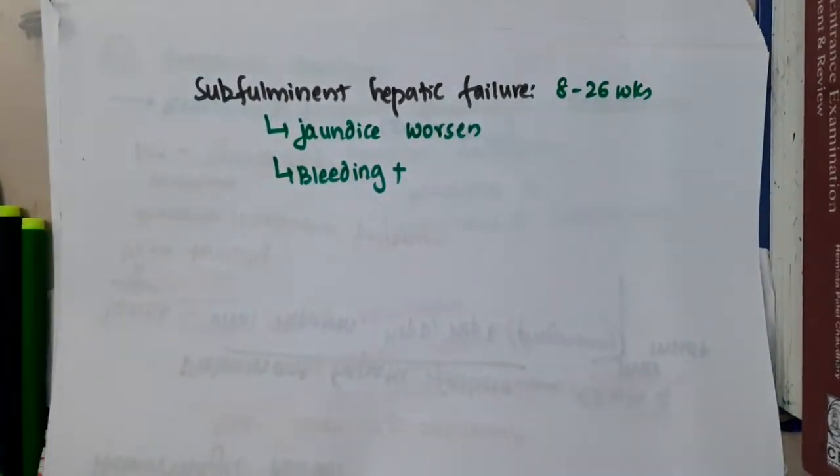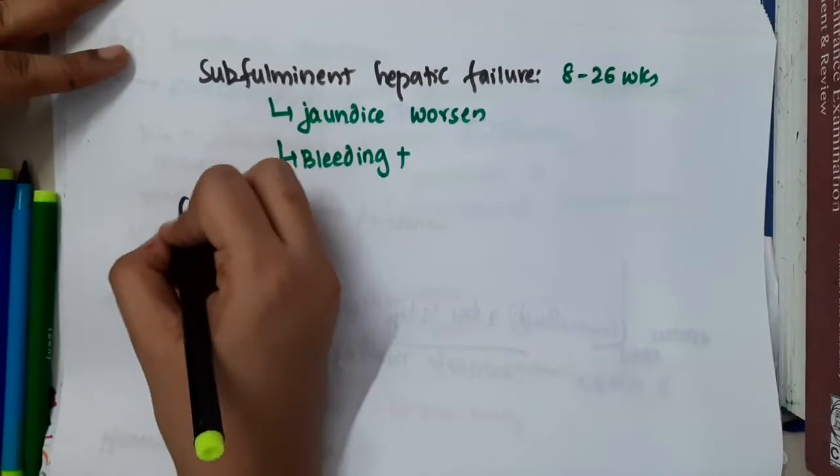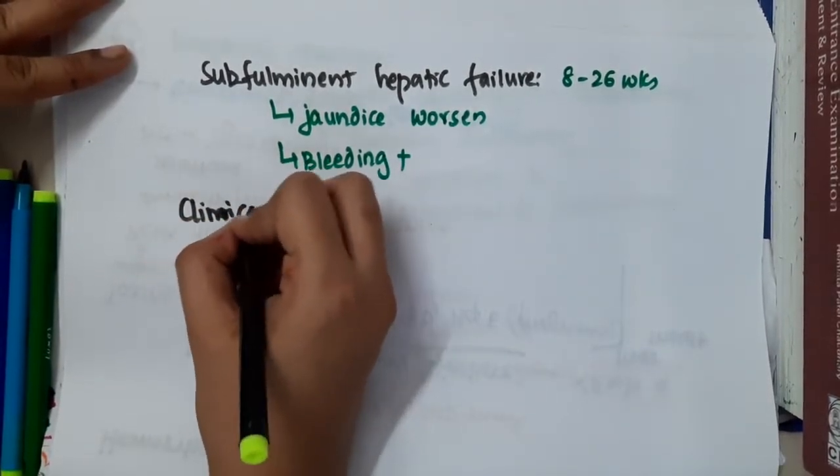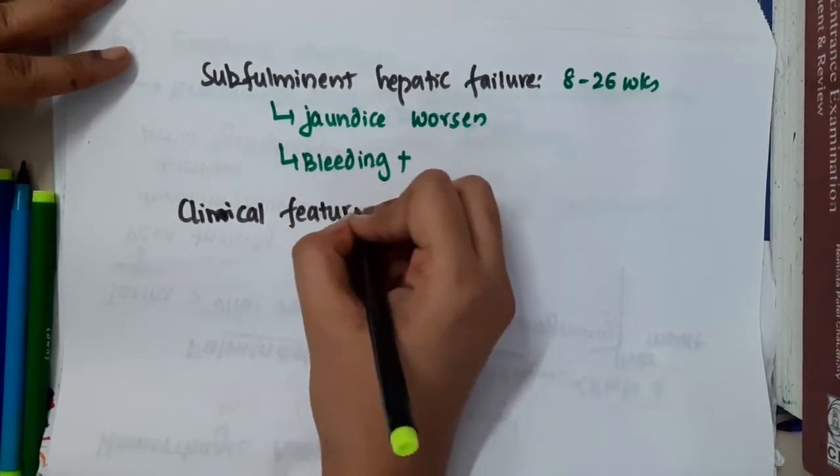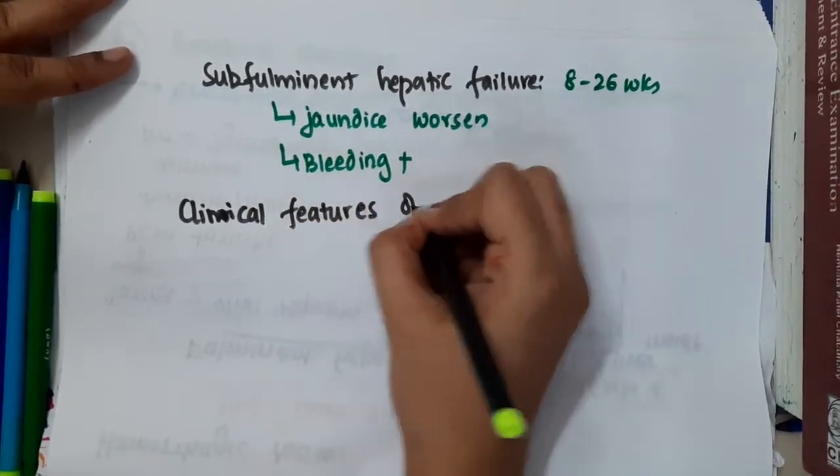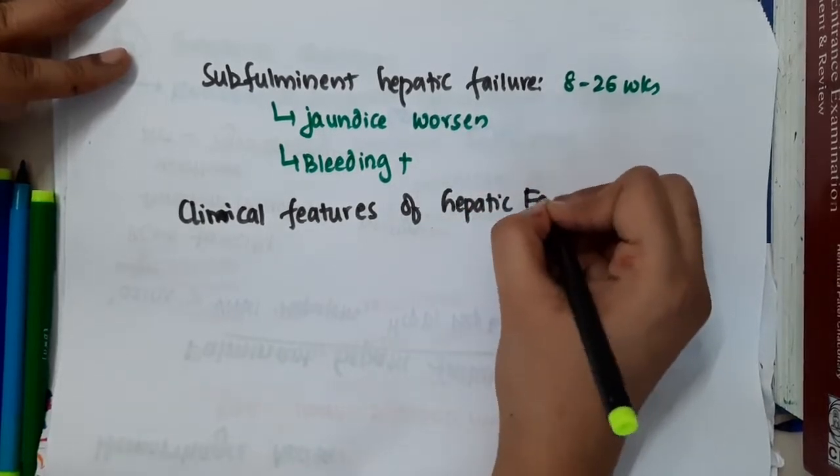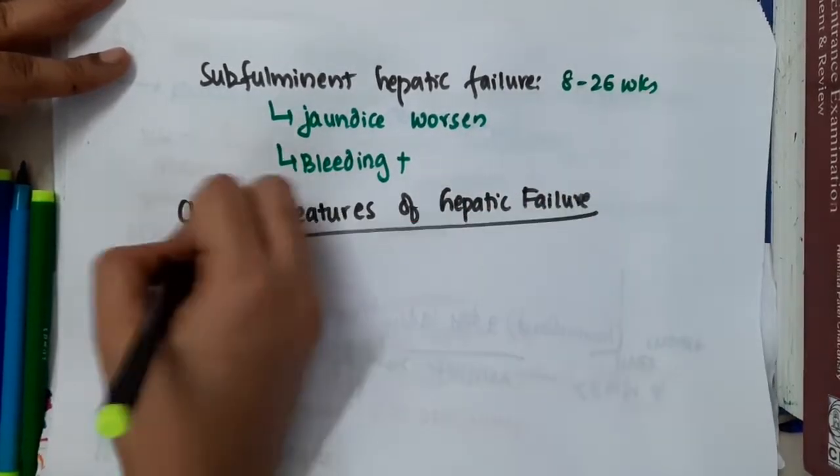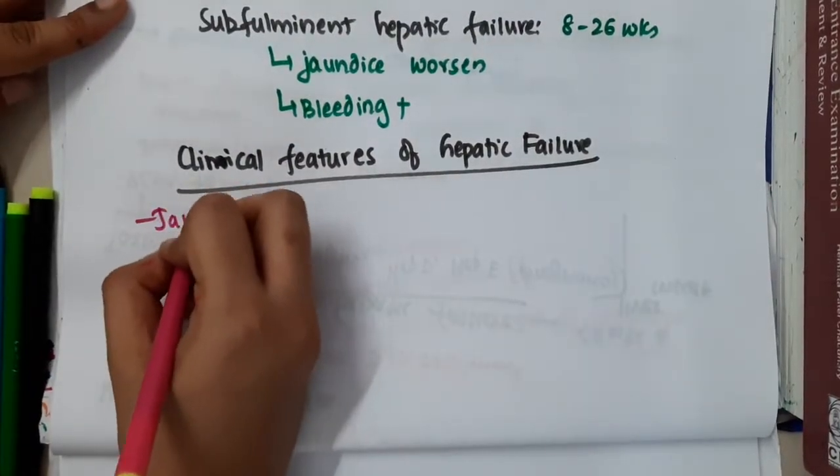Now let us now learn the clinical features of hepatic failure. Whether it is fulminant or sub-fulminant, the clinical features will almost be similar. In fulminant, they are abrupt. In sub-fulminant, they will come gradually. So clinical features of hepatic failure include jaundice, definitely it will be present.